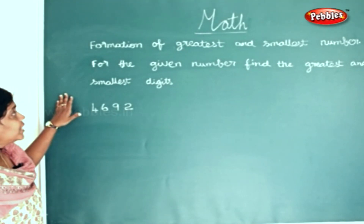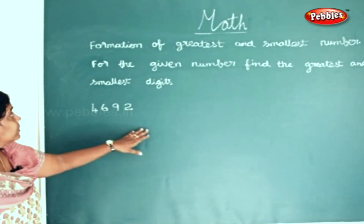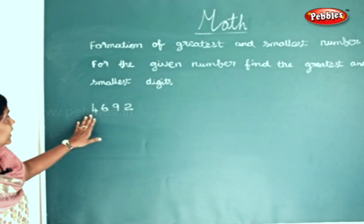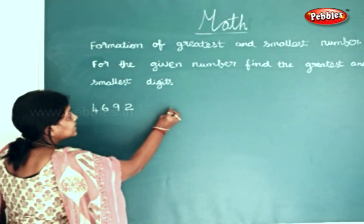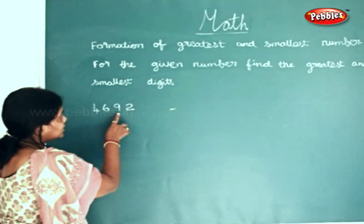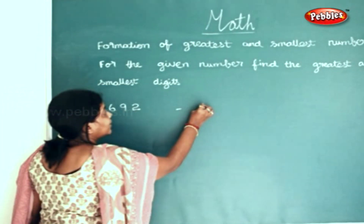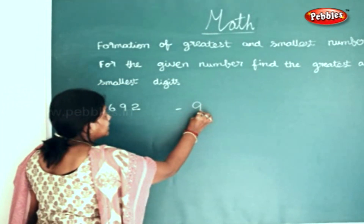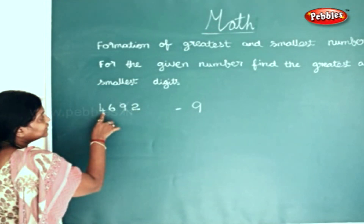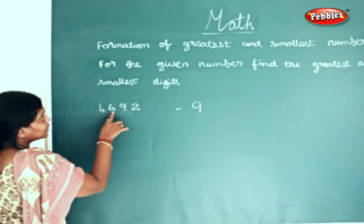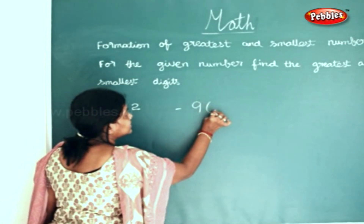Now we will see the formation of the greatest and the smallest number for the given number. We will find the greatest and smallest digit. Which is the greatest digit here? Nine is your greatest digit, so I'm writing nine. Now I'll strike out this nine. Among the remaining numbers, six is the greatest.